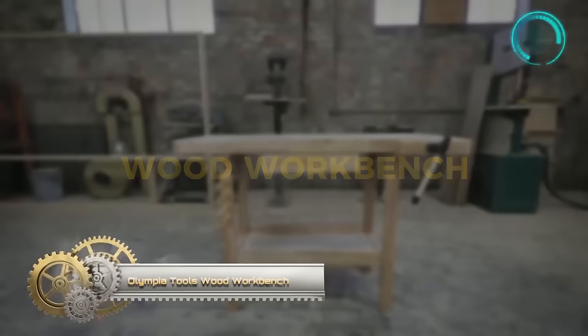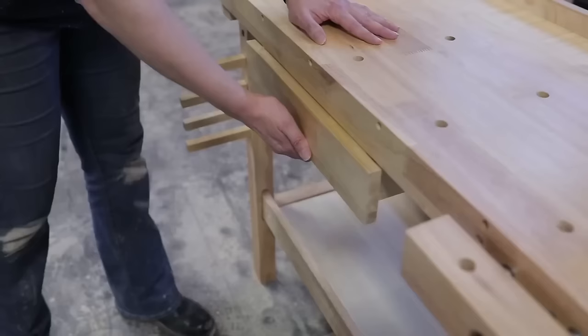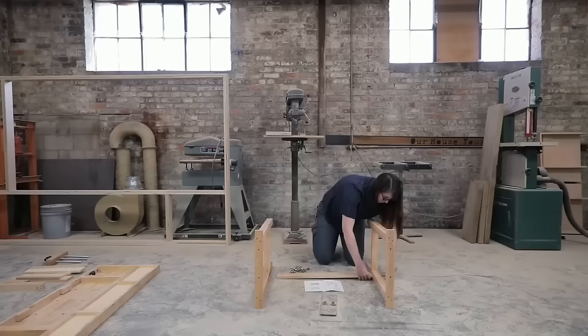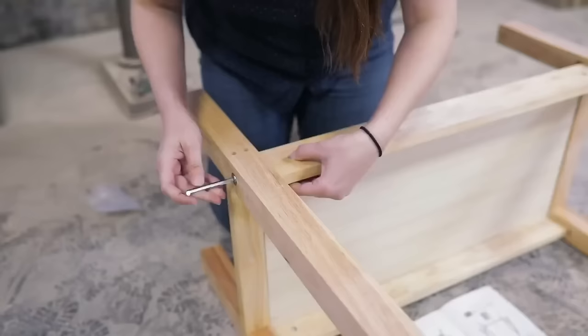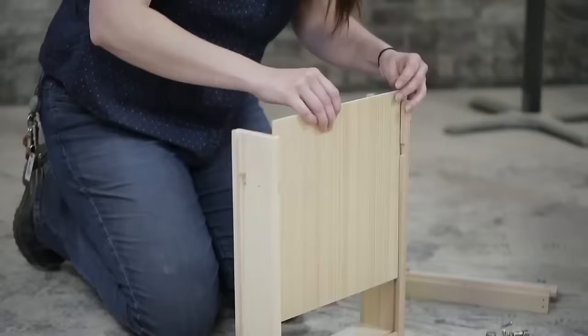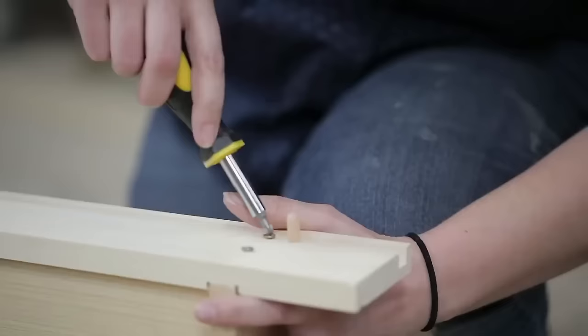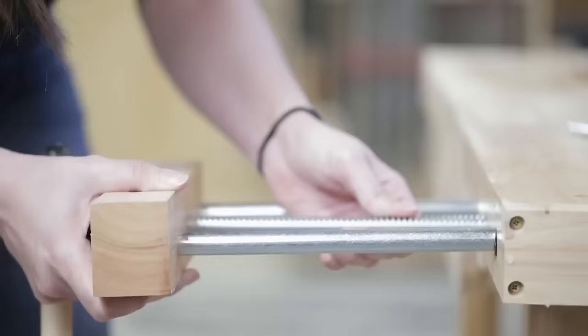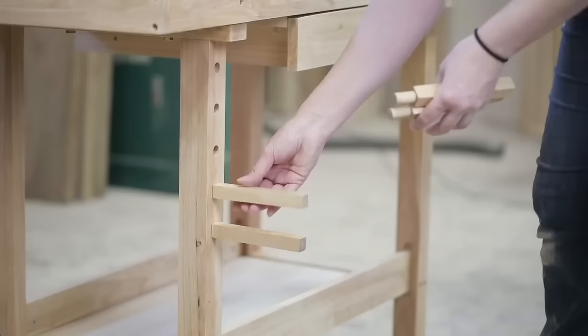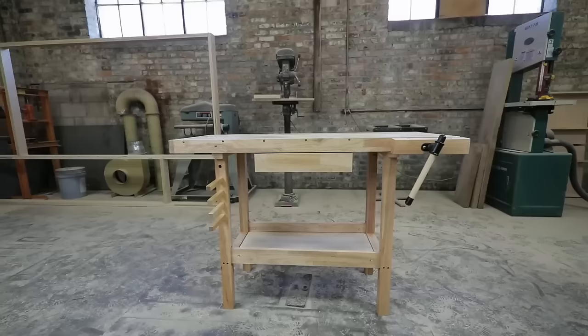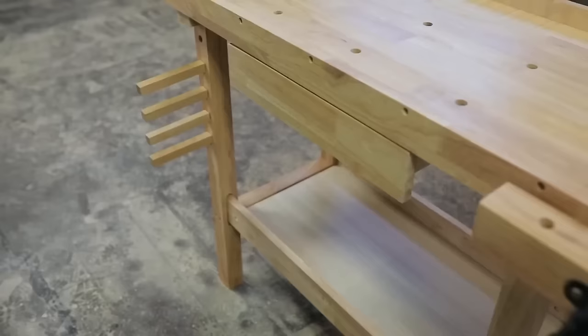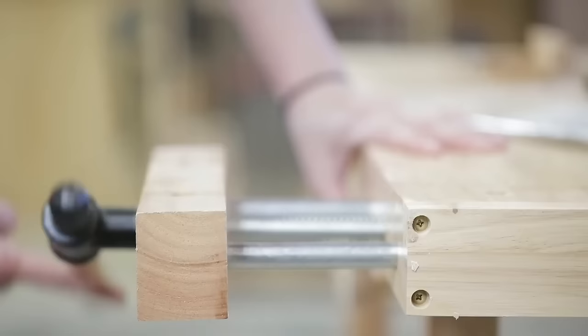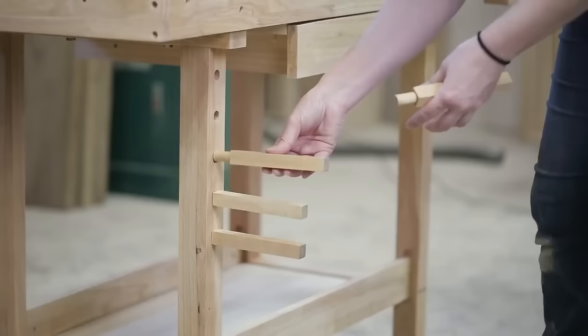The Olympia Tools Wood Workbench is a solid and sturdy workbench that is perfect for a variety of woodworking projects. It is made with a hardwood top and a steel frame, and it can support up to 330 pounds of weight. The workbench has a large work surface, providing ample space for even the most extensive projects, and it features a built-in shelf for convenient tool and supply storage. With a dog hole system, you can securely clamp workpieces in place, ensuring accuracy and safety in your woodworking tasks. The adjustable feet allow you to level the workbench on uneven surfaces, providing stability during your projects. Whether you're a beginner or an experienced woodworker, the Olympia Tools Wood Workbench offers reliable construction and versatility to accommodate various woodworking needs.